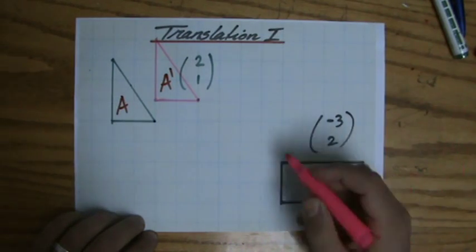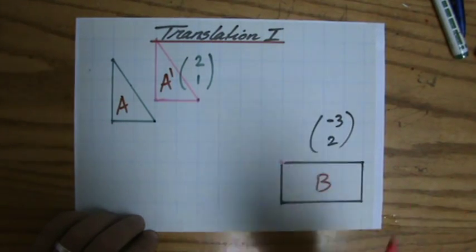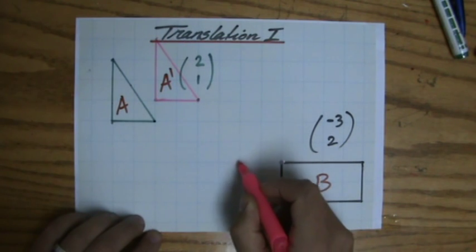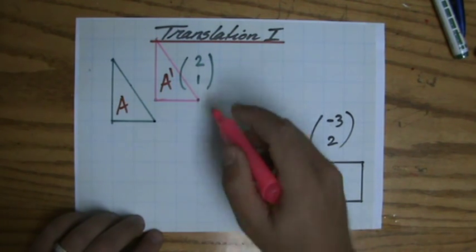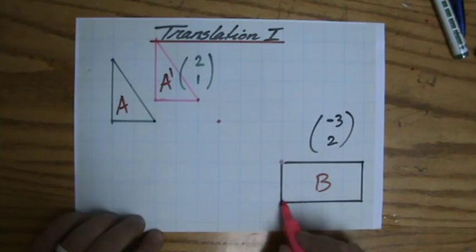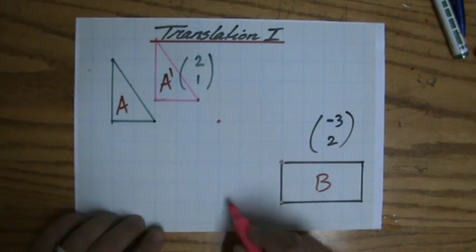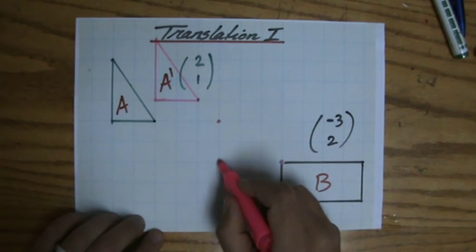So that means minus three—to the left three—and then two up. It's going to be over there. What about this one? Minus three and then two—over there. What about that one? One, two, three—one and two. It's going to be over there.